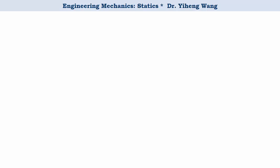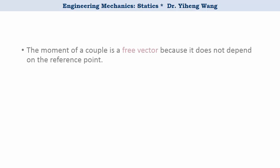Therefore, based on the previous three calculations, we learned that the moment of a couple is a free vector because it does not depend on the reference point. This is unlike the moment of a force, which is calculated differently depending on what point or axis you choose to calculate the moment about.